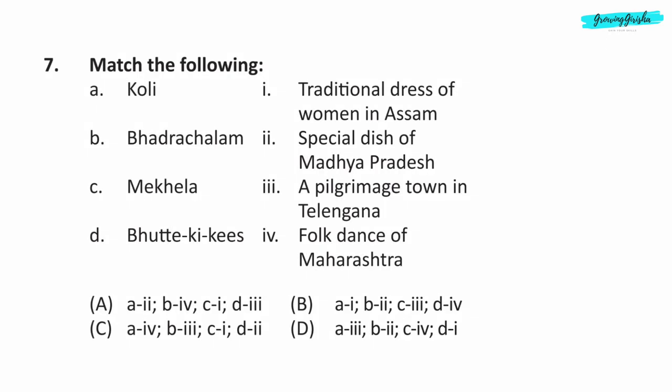Question 7. Match the following. Koli is the folk dance of Maharashtra. Bhadrachalam is a pilgrimage town in Telangana. Mekhla is the traditional dress of women in Assam. Kohli is a special dish of Madhya Pradesh. Correct answer is option C.